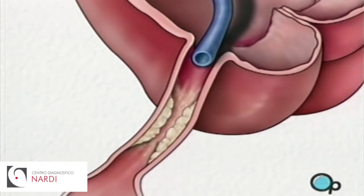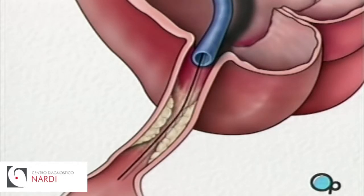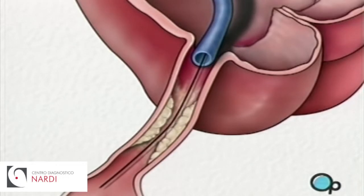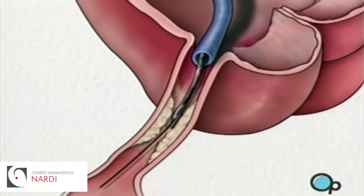Once the restricted area has been identified, a thin wire is inserted into the catheter and is guided all the way to the blocked area and then slightly beyond. This wire acts as a guide for the balloon catheter, allowing your doctor to position the deflated balloon precisely in the middle of the narrowest part of the coronary artery.